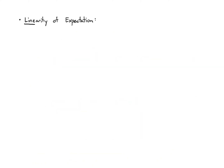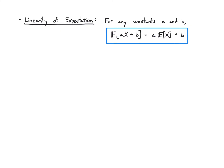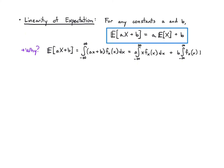All our properties carry over, so we have linearity of expectation. If we have two constants a and b and we're interested in the expectation of a linear function, we can move the constants outside the expectation: E[aX + b] = a·E[X] + b. This is true because we can write the expectation as an integral of the function, pull out a, and split b into its own term. Normalization tells us the integral of the pdf is just 1, giving us a·E[X] + b.